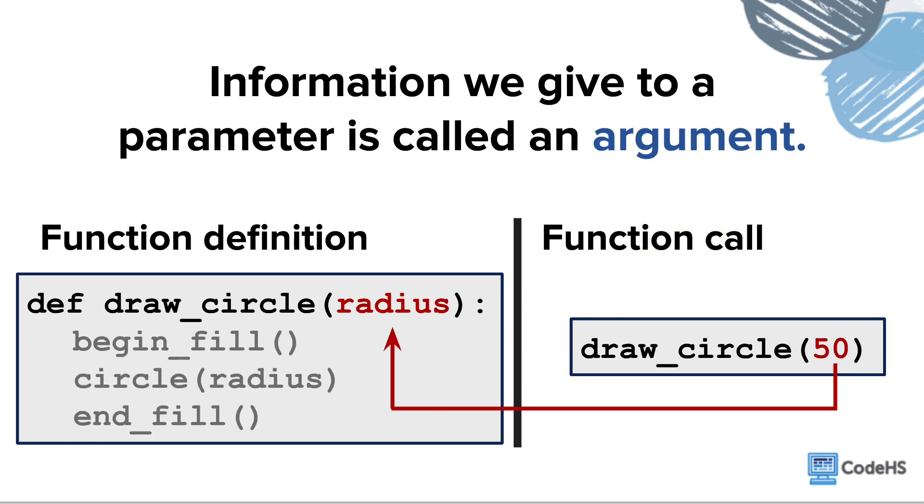When we call a function that has parameters, we enter the needed information inside the parentheses that come after the function name. This information is given to the function and can be used inside the commands we call inside the function. When we give information as a parameter, it is called an argument. In this case, radius is the parameter name and 50 is the argument we are given.